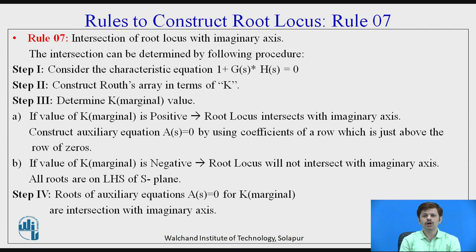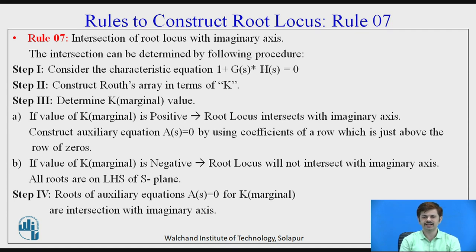If K marginal is negative, that implies all the roots lie on the left-hand side of the s-plane and the system is stable. In step four, if K marginal is positive and the auxiliary equation has been found, we equate it to zero and find its roots. The roots obtained from the auxiliary equation represent the intersection of the root locus with the imaginary axis.